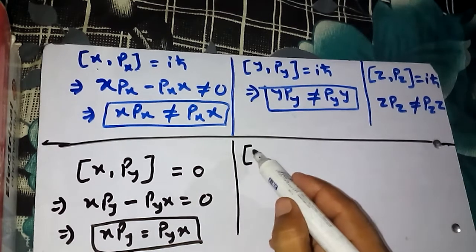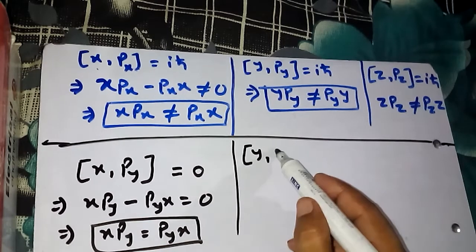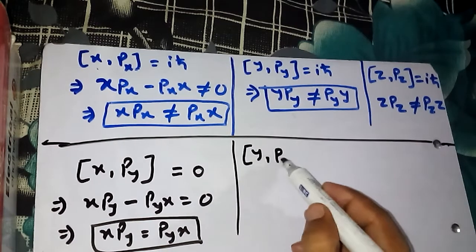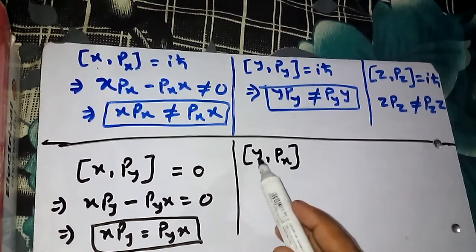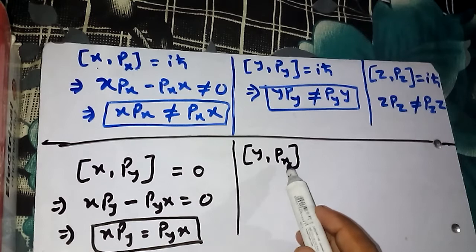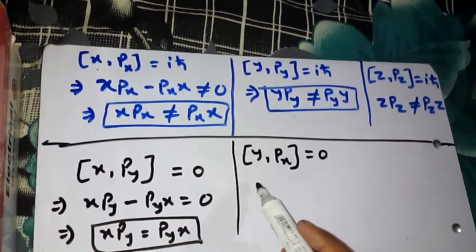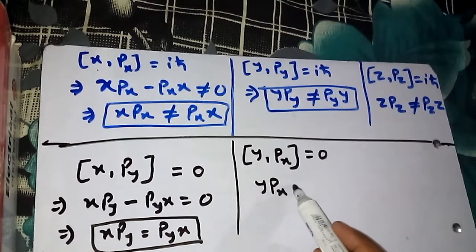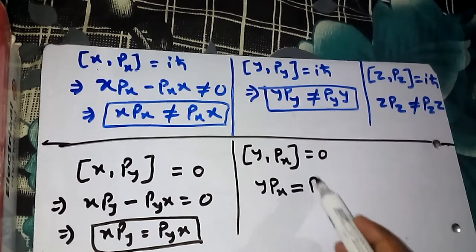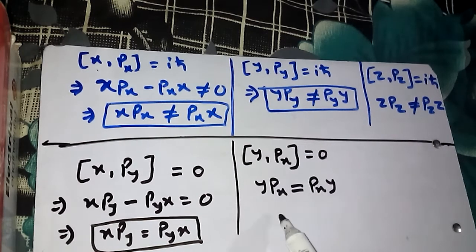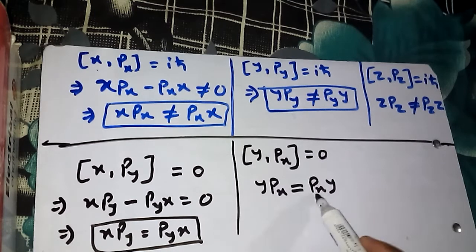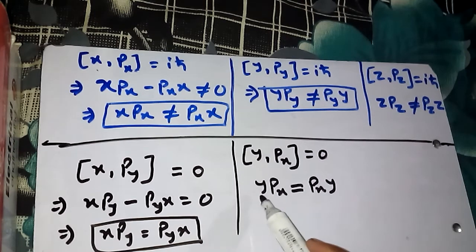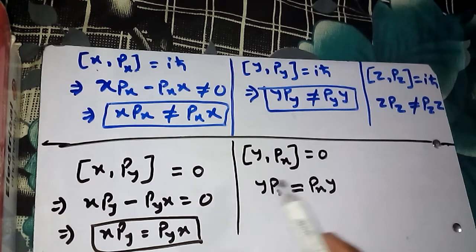Similarly, if you have Y and Px — the Y component of position and X component of momentum — the commutator is zero. From here we can directly write that YPx can be written as PxY. So YPx is nothing different from PxY; they are the same thing and the order doesn't matter.